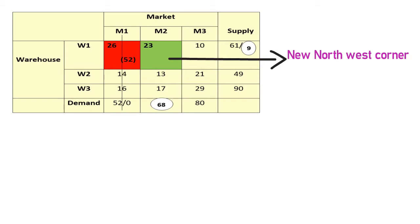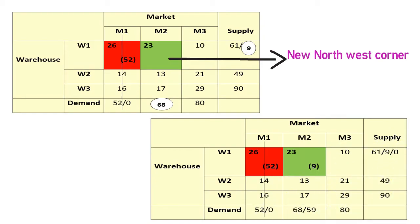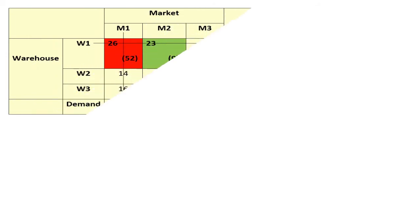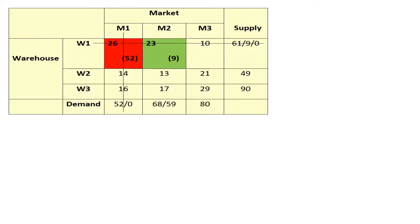We allocate the maximum possible units to cell W1,M2, which is 9. Subtracting: 9 minus 9 gives 0 in supply, and demand becomes 68 minus 9 = 59, written as 68/59. Since supply is now 0, there is fulfillment of the supply — we cross out the first row.